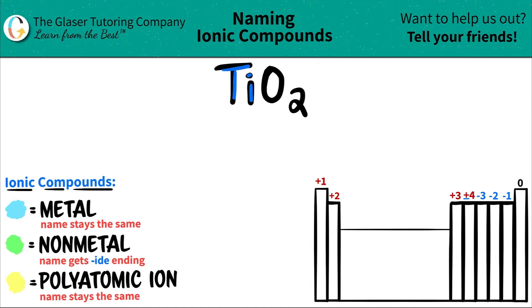We have Ti, not the rapper, right? Where did Ti go? I don't know. He had such good songs. But anyway, I digress. Ti is titanium and O is oxygen.